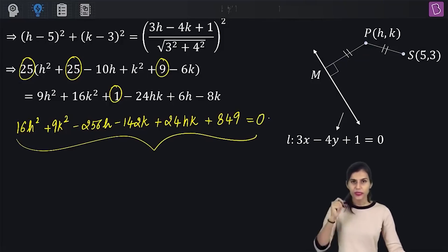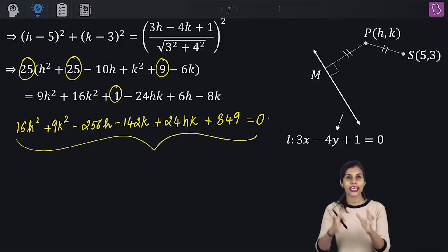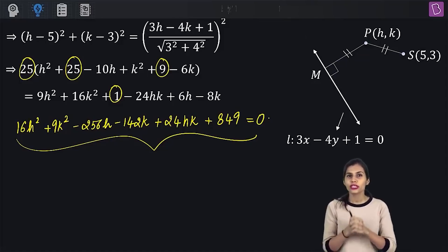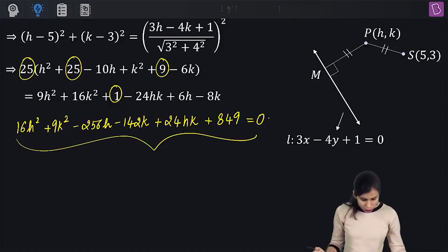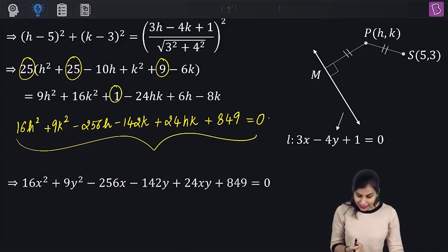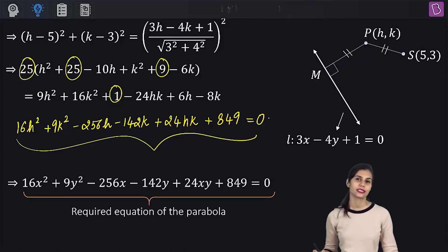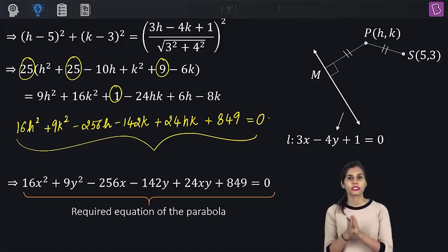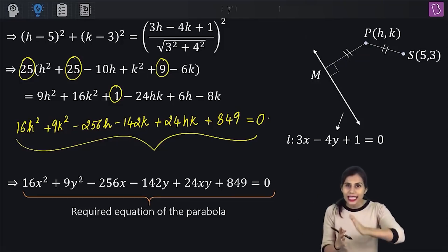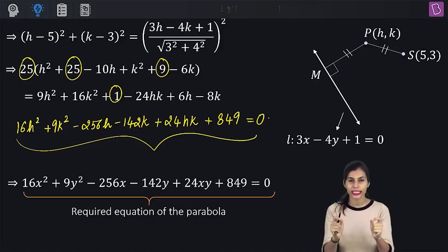So the equation consists of h, k and constants, free from any unnecessary parameter. We are almost done. In the last step, we replace h with x and k with y. The resulting equation in x and y represents the equation of the parabola the question was asking us to find. I just used the basic property PS = PM, and that property alone was enough to give me the equation of the parabola.